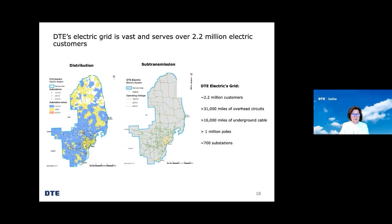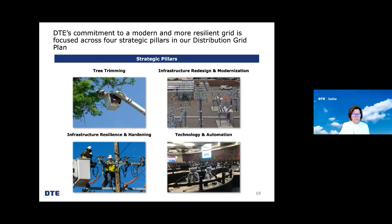Our grid now must be adapted to the 21st century to accommodate increasingly severe weather events, new and changing customer expectations, and integrate new advanced technologies such as electric vehicles charging at home or at work, and rooftop solar. Last year, DTE developed a robust distribution grid plan, which is the first step on our journey towards the grid of the future. Our plan is organized around four strategic pillars: tree trimming, infrastructure resilience and hardening, infrastructure redesign and modernization, and technology and automation.